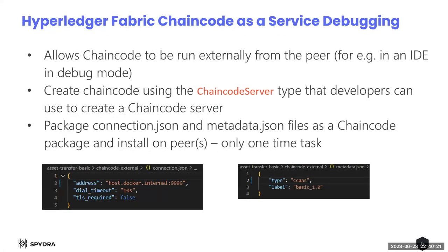I'll cover the chain code as a service debugging method first because that's the more recent and recommended model of deployment going forward for chain code. Let's take a look at how that can actually be used to debug chain code while you're writing it.